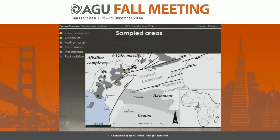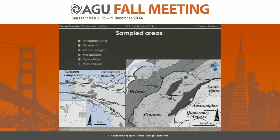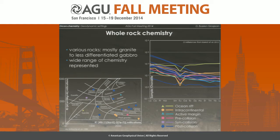We have sampled six different geodynamic contexts. The intracontinental one is represented by alkaline complexes from the Cameroon volcanic line. We have also sampled syn-collision and post-collisional Variscan complexes that are mostly calc-alkaline in Brittany, but also in the Swiss Alps. In the Swiss Alps, we found some active margin and pre-collision settings, and we completed our database with the Chenaillet ophiolite in the French Alps. We have mostly sampled granites, but also less-differentiated gabbros to have a wider crystallization sequence to see if it influences the chemistry of the zircons.